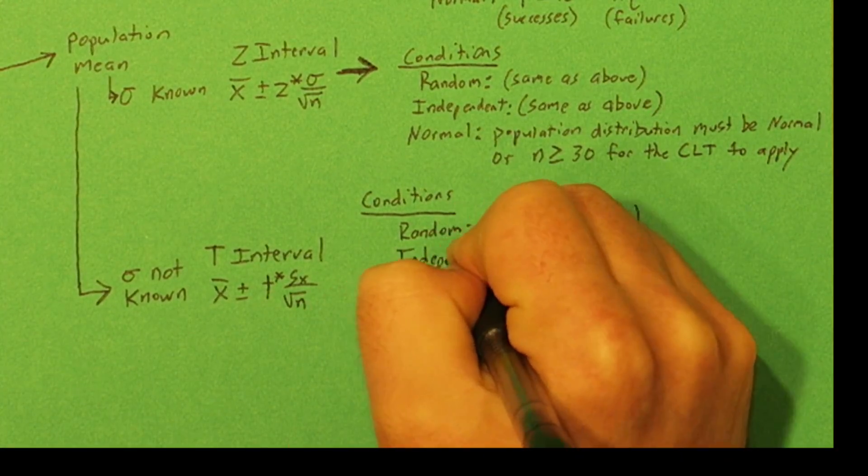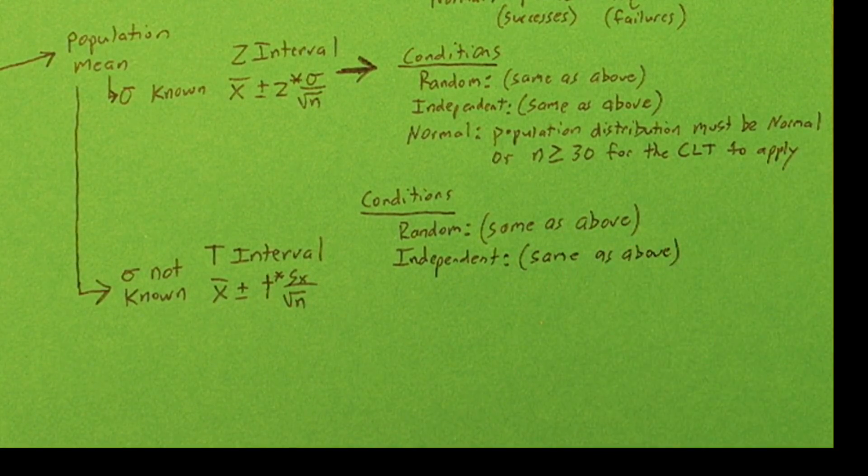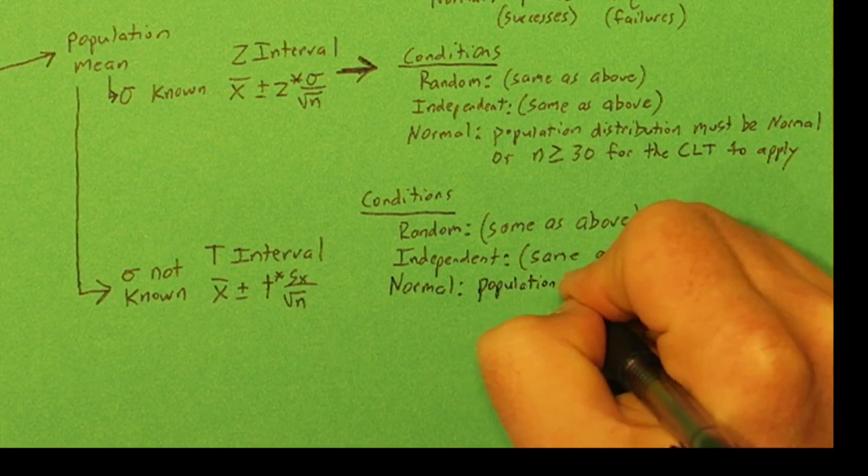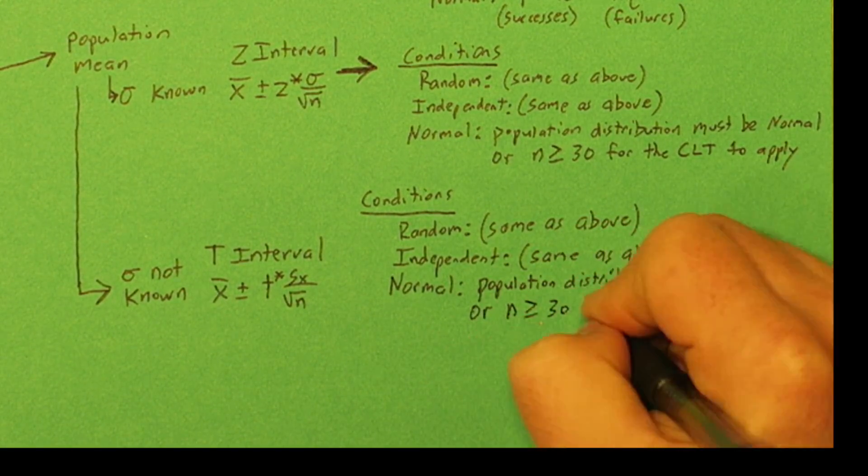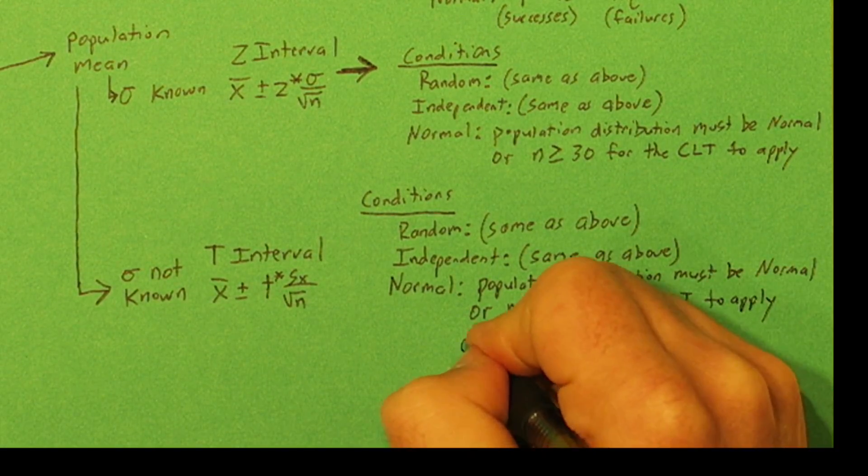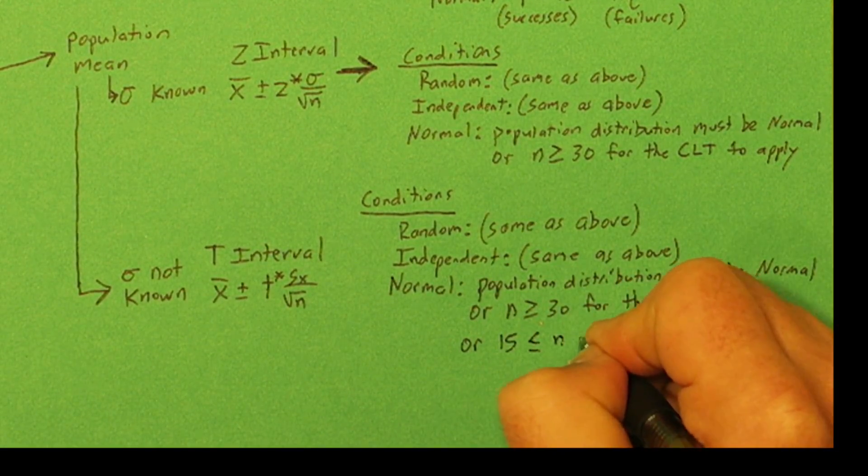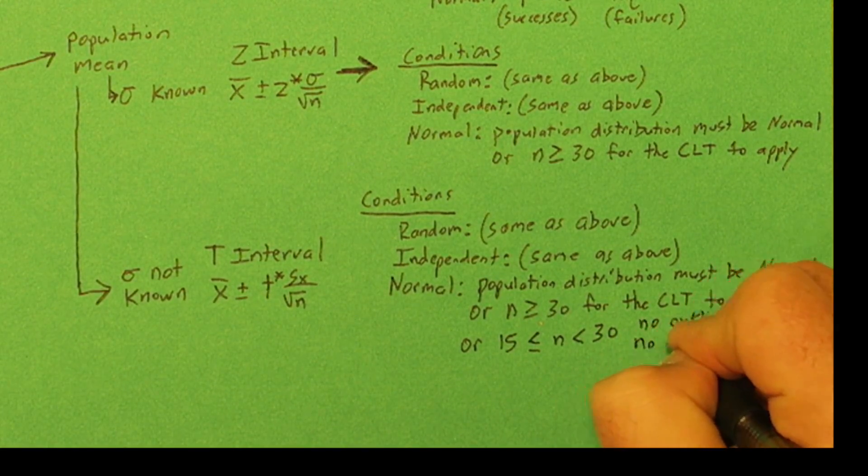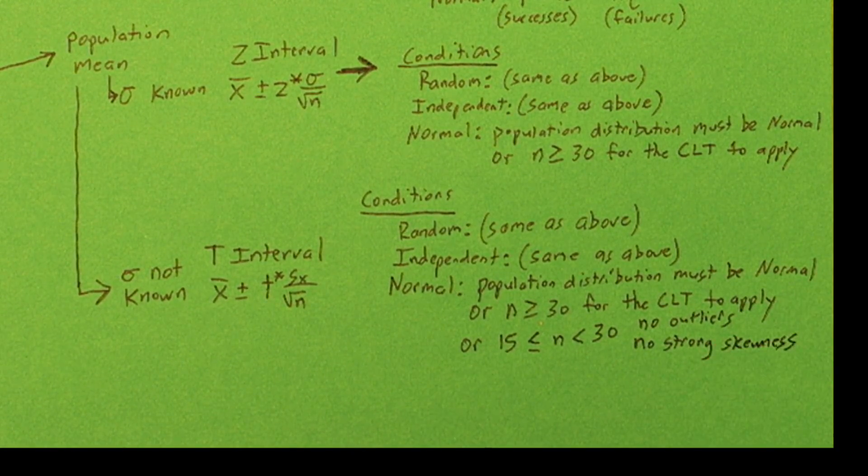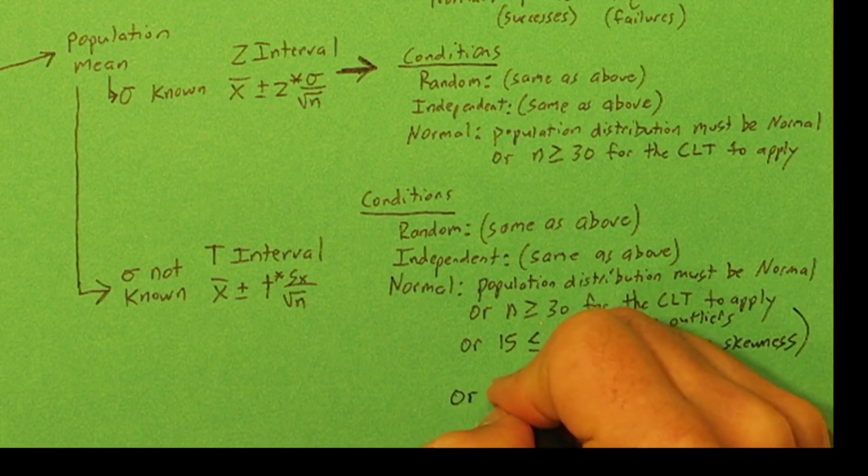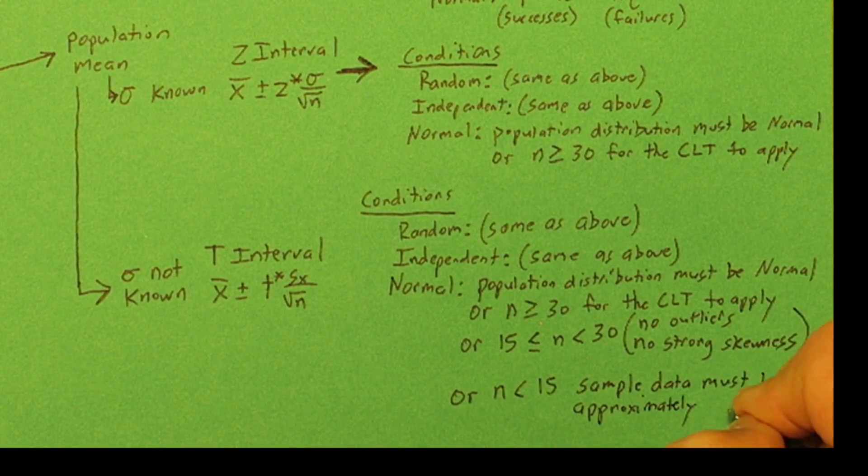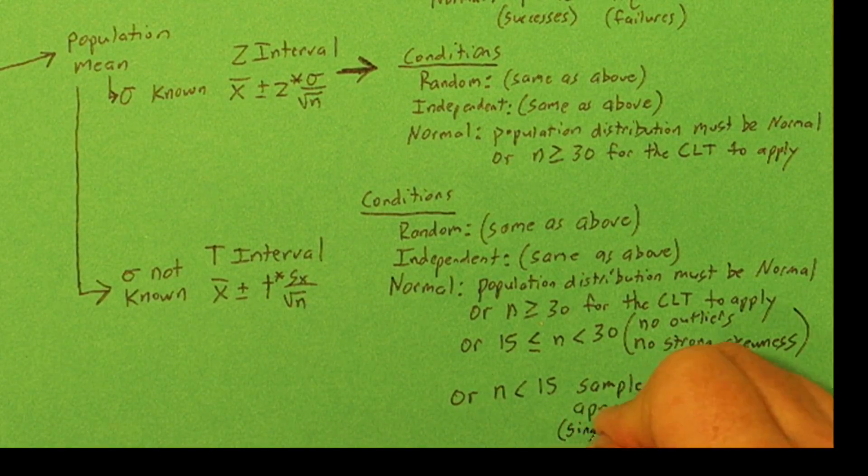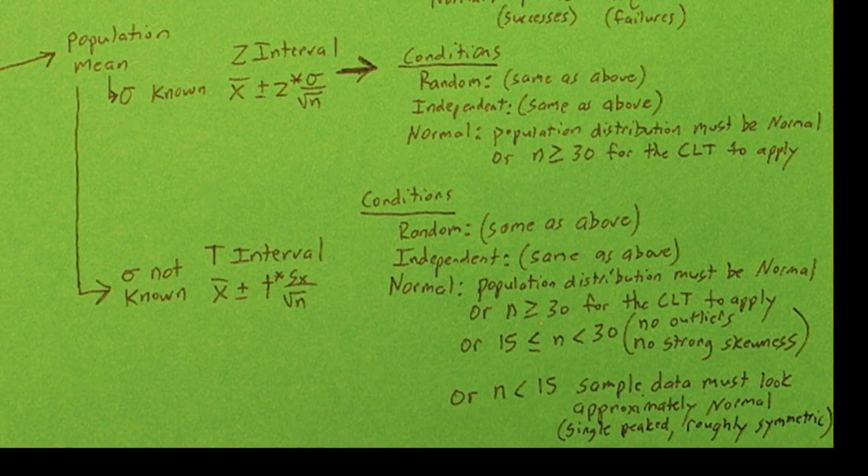Your random and independent conditions are the same as above, but for normal there's lots of different ways you can meet it. First, if the population distribution is normal, then you're good. Or if your sample size is at least 30 again, you can use the central limit theorem. If your sample size is at least 15 but less than 30, as long as there's no outliers or strong skewness, you can use t procedures. Now even if your sample is less than 15, if the sample data looks approximately normal, so if it's unimodal, has one peak, and it's roughly symmetric, you're okay. Your normal condition is met.